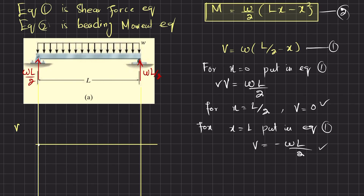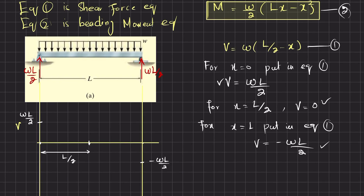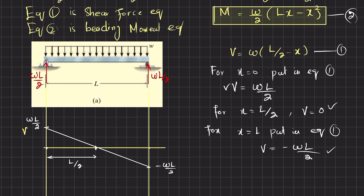At x equals 0, shear force V equals wl/2. At x equals l/2, shear force is 0. At x equals l, shear force is minus wl/2. Since the applied load is uniform (constant), the shear force will be one degree higher — a straight line with decreasing slope. Join these three points with a straight line to complete the shear force diagram.